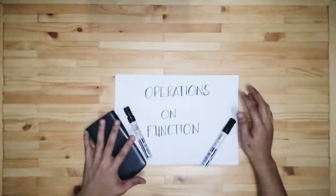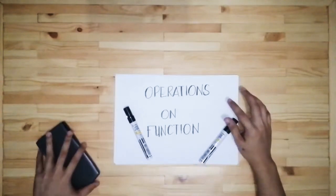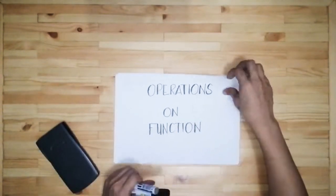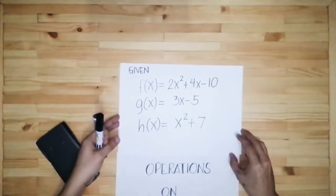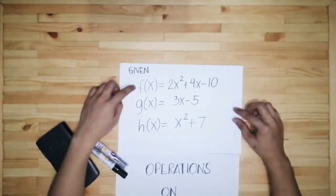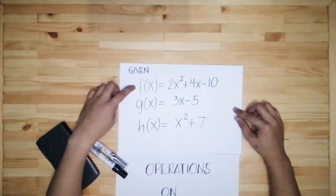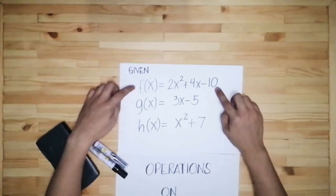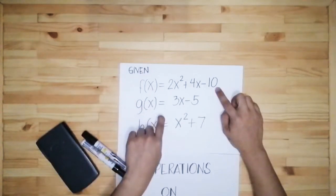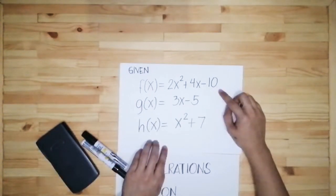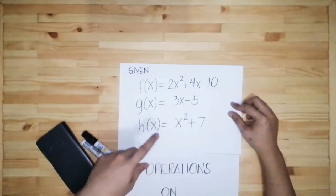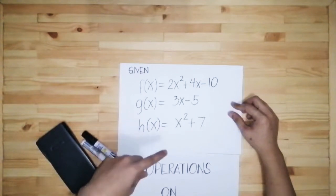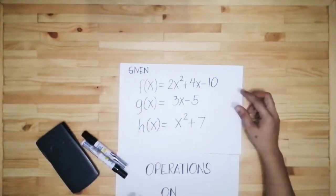So let's start the discussion about operations on functions. I have here three given equations. We have f of x equals 2x squared plus 4x minus 10, g of x equals 3x minus 5, and h of x equals x squared plus 7. These are the equations we will be using to show you the operations on functions.